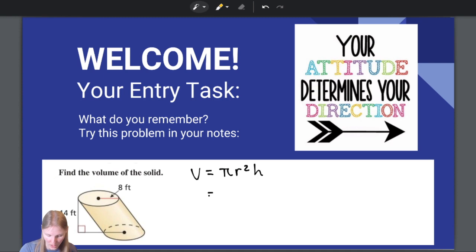So we are going to plug some numbers in. We have that r, r stands for radius, and our radius is 8. So we have 8 squared times the height, which is 14. And we can simplify this to get the exact answer. 8 squared times 14 is 896 pi.